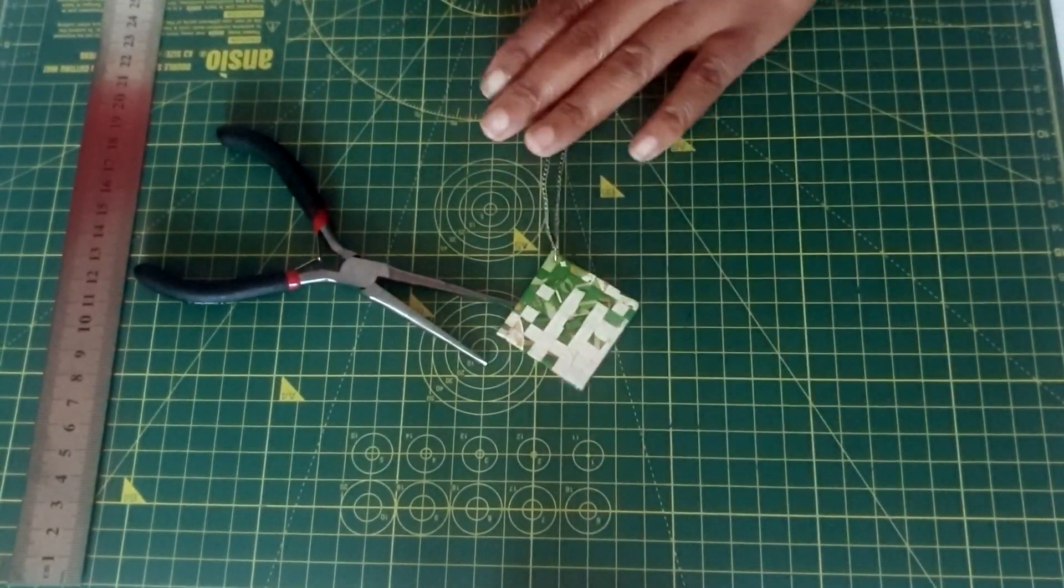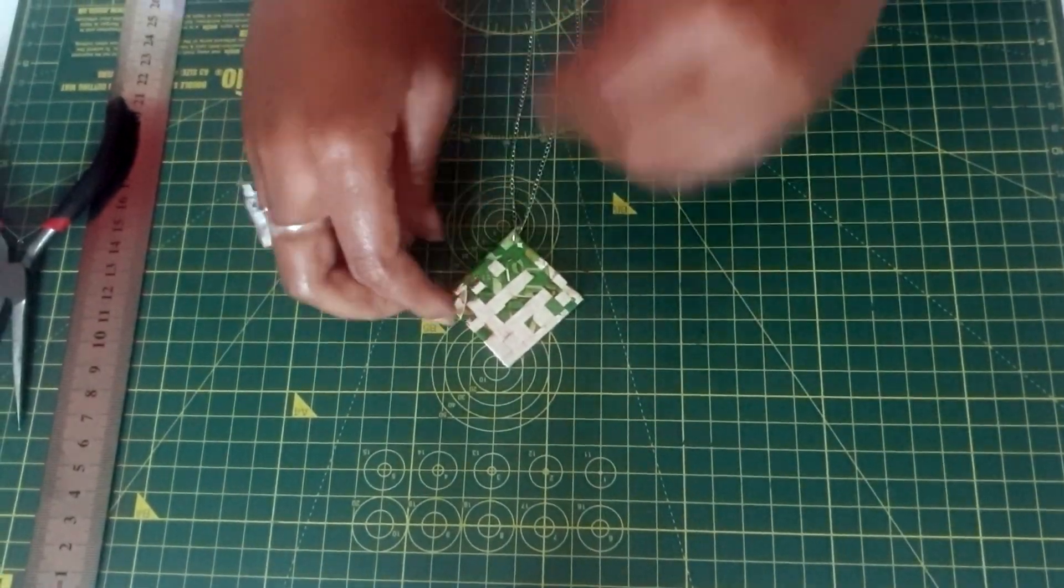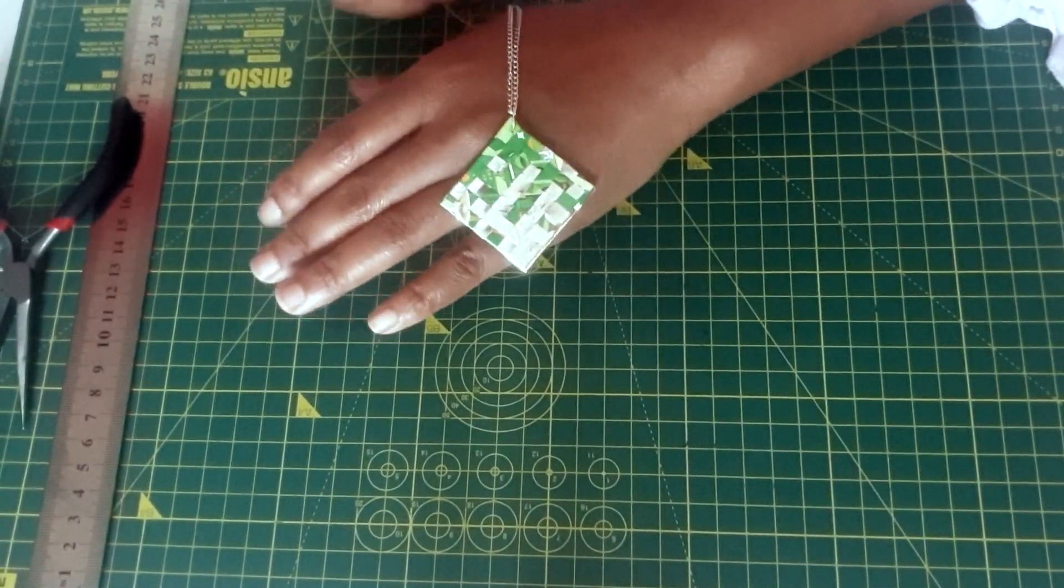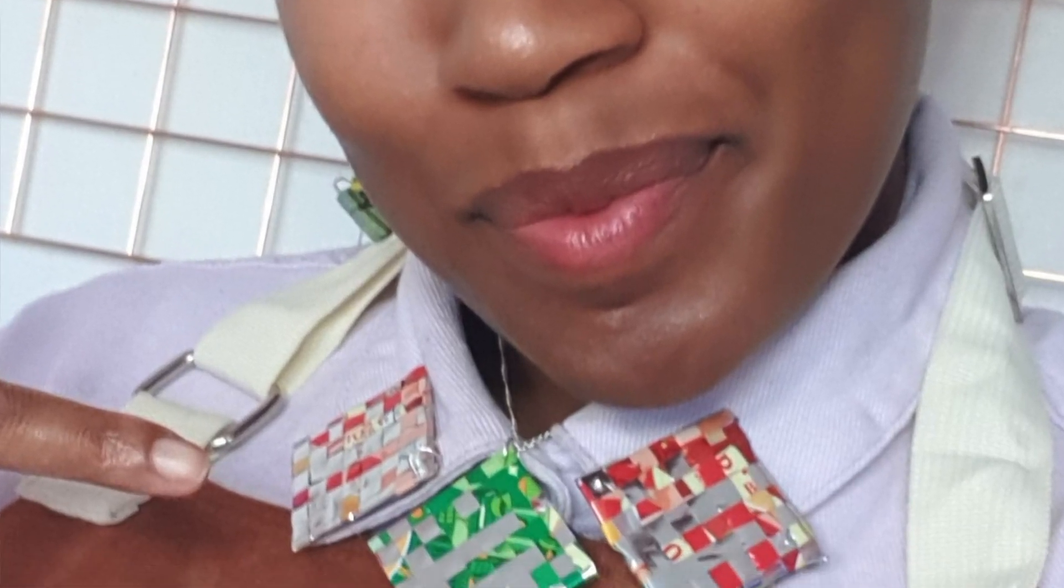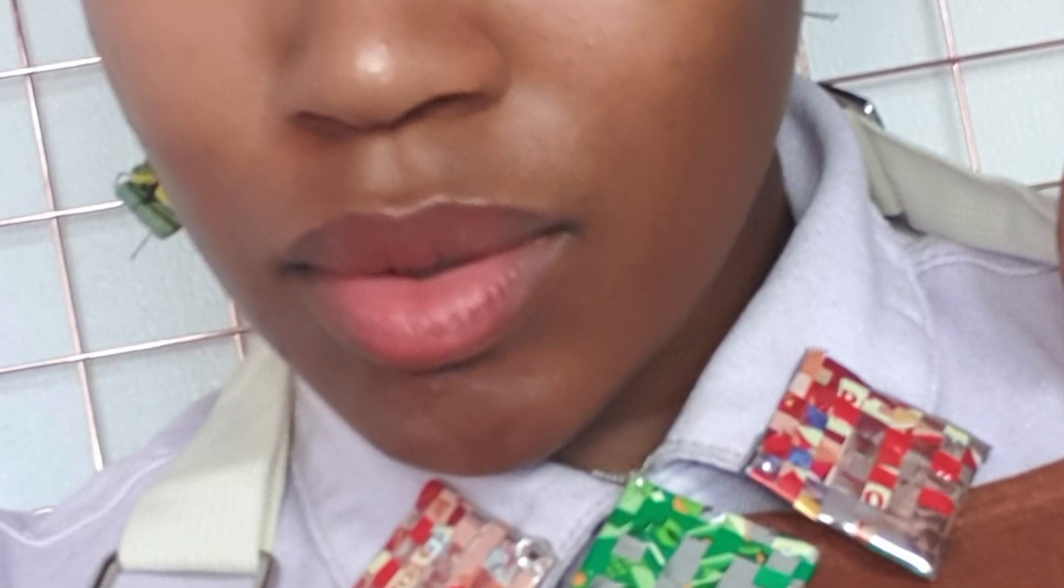And there you have it, that's it done and ready to be worn and sported and styled as you can see me doing. I've made this into a necklace but this could become earrings, you can try out different colors, different sizes.